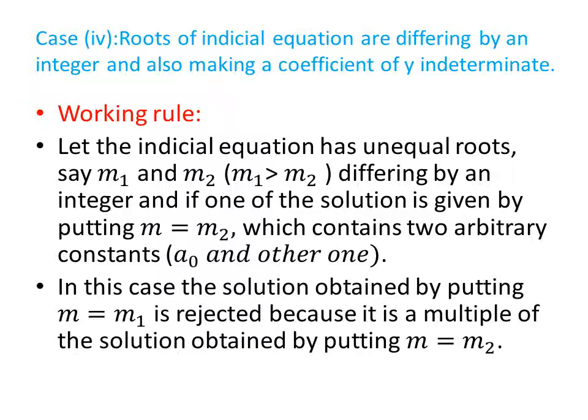This another one constant remains indeterminate when we put m equal to m2. In this case, the solution obtained by putting m equal to m1 will be rejected because it gives no independent solution. It is just a multiple of the solution obtained by putting m equal to m2.